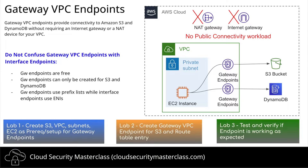We'll first do a setup exactly as you see on this screen. We'll create a VPC, subnet, and EC2 instance within it. We'll make sure there is no public internet connectivity for that EC2 instance, and then we'll try to connect that EC2 instance to an S3 bucket using gateway endpoints.